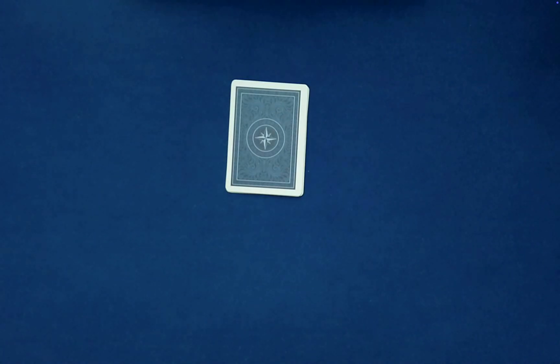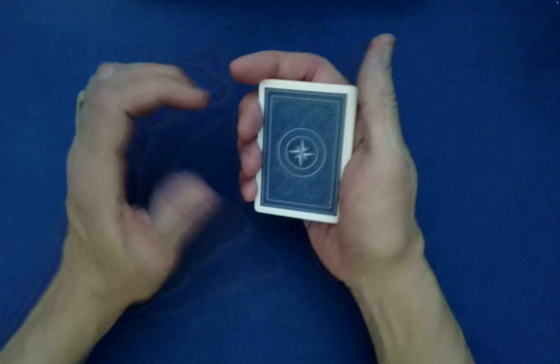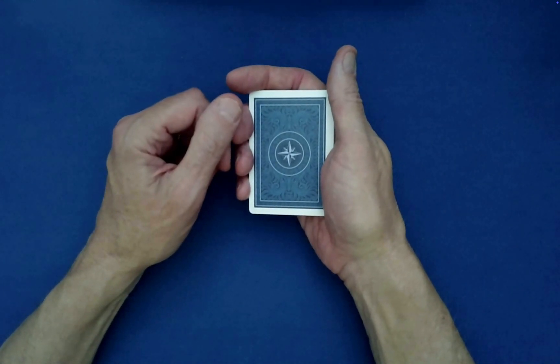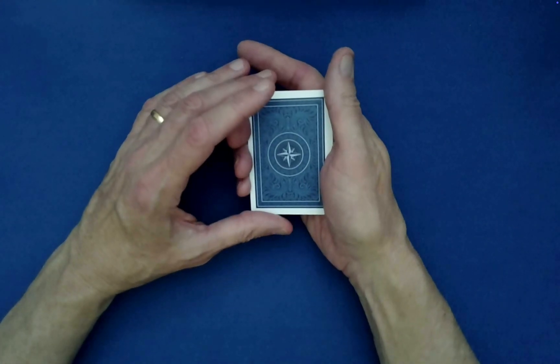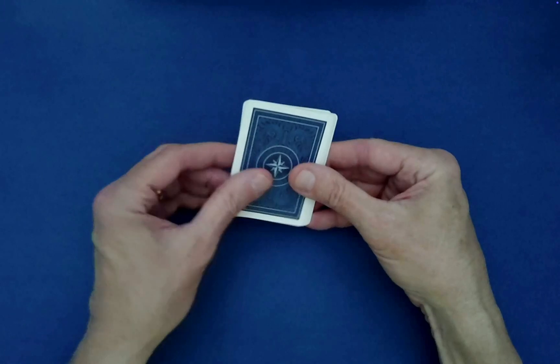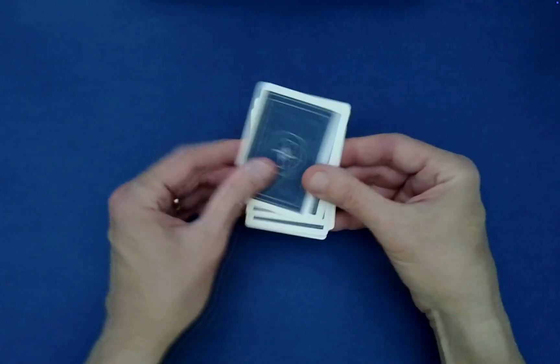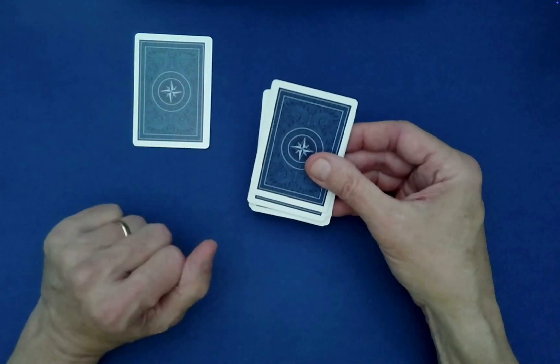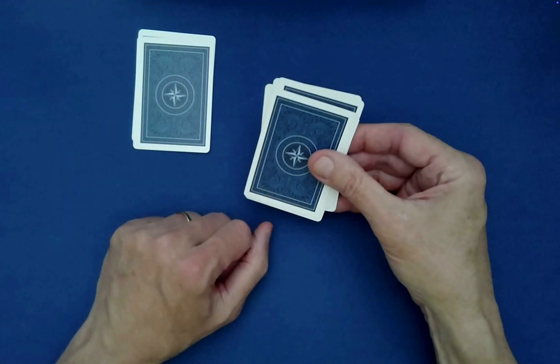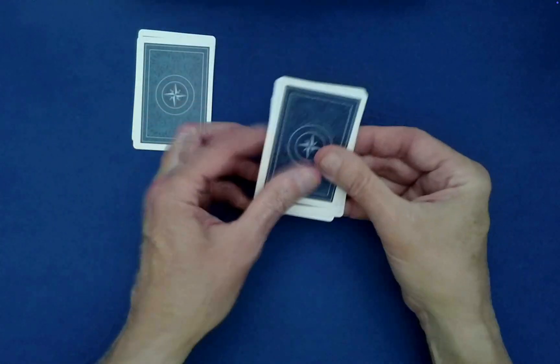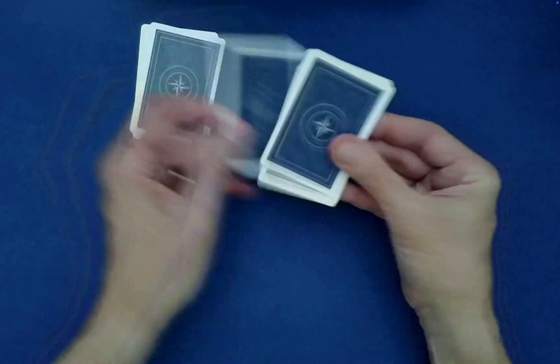And now to finish, we're going to use a special spelling system. Since you've asked for a separating of the reds from the blacks, we're going to just spell out those words. So R-E-D-S F-R-O-M B-L-A-C-K-S.